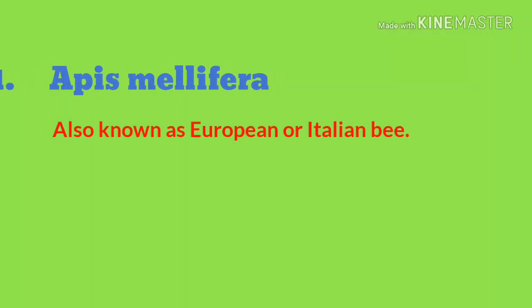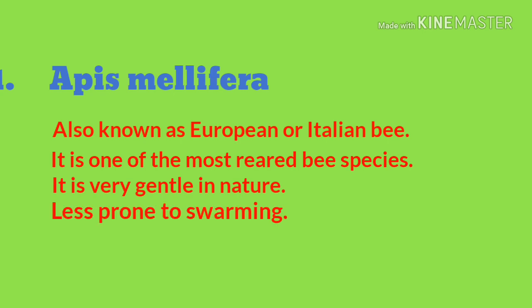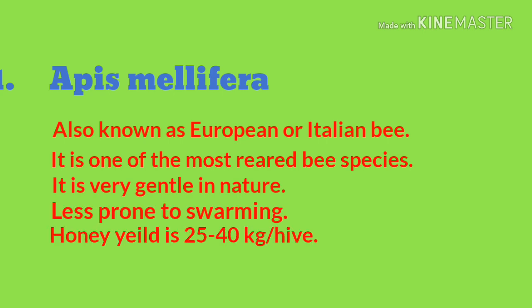Apis mellifera, also known as European bee or Italian bee, is one of the most widely used bee species for honey production. Its favored use in honey production is due to its gentle nature. Mellifera is less prone to swarming and absconding, and it produces 25 to 40 kilograms of honey per hive annually.